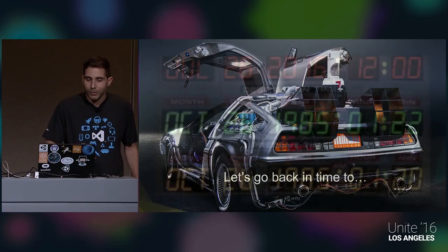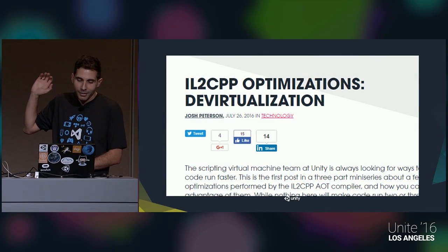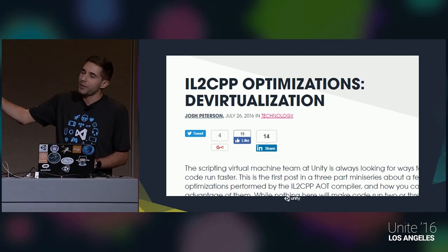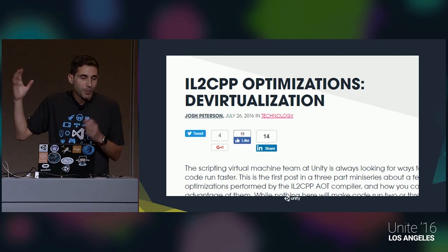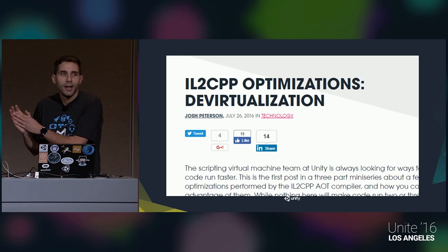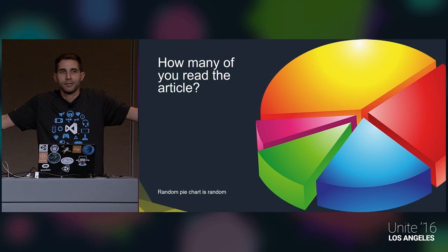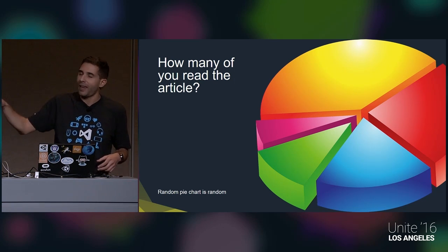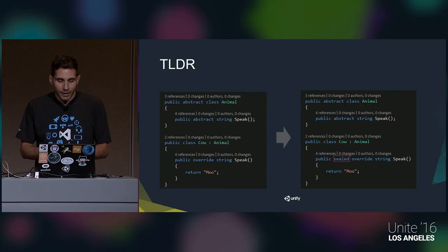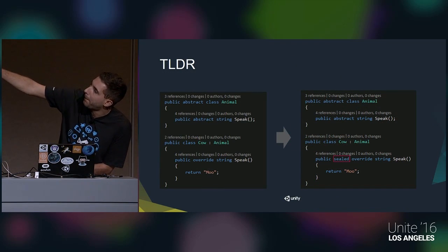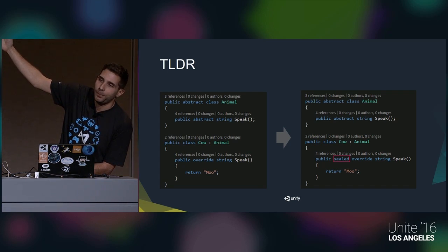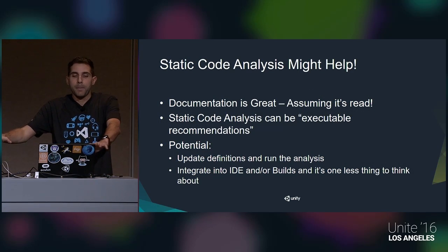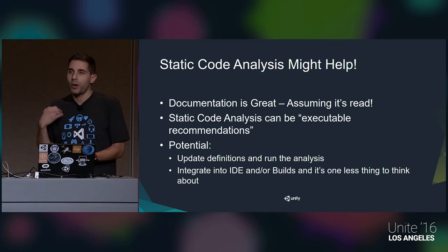I'm going to go back in time to July 26, 2016, when Josh Peterson from Unity wrote a blog post. It's pretty specific about IL2CPP optimization - a topic called devirtualization. How many people here have seen it? How many people remember exactly what it is? And that's the point - fewer and fewer hands. The TLDR: if you have some kind of abstract class, make sure you seal it, especially if you're targeting iOS.